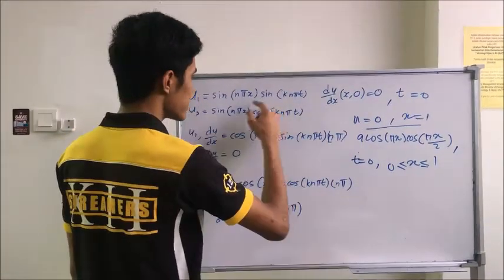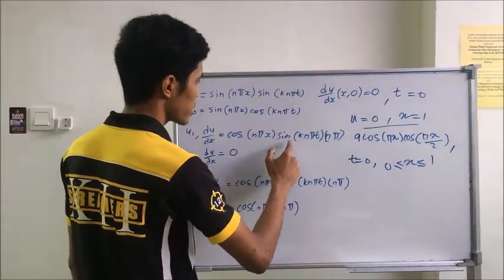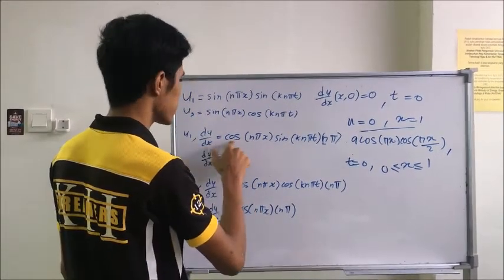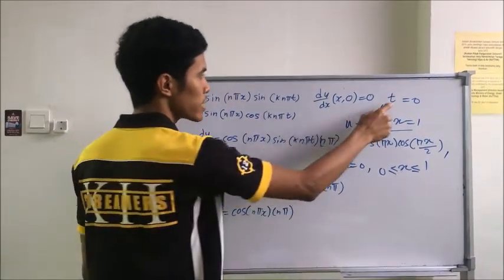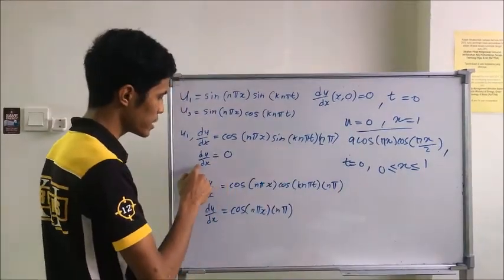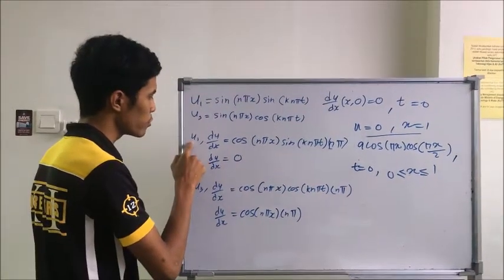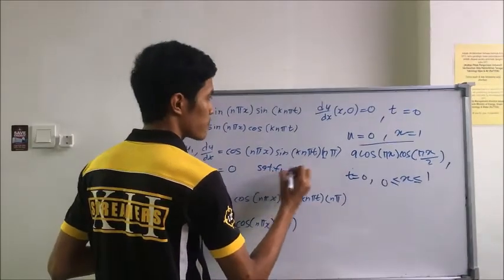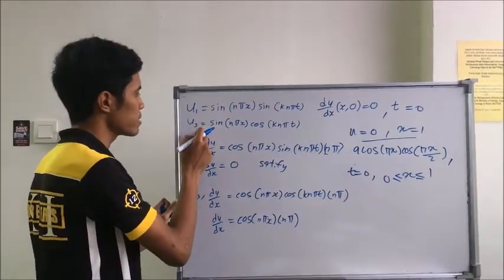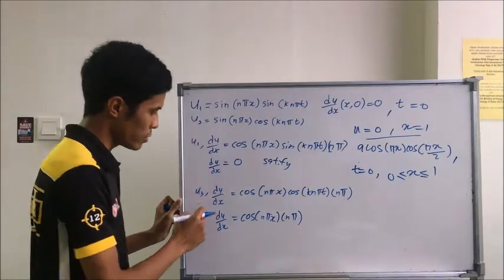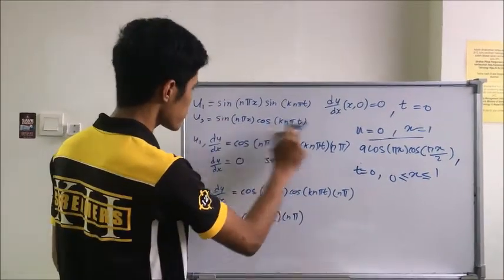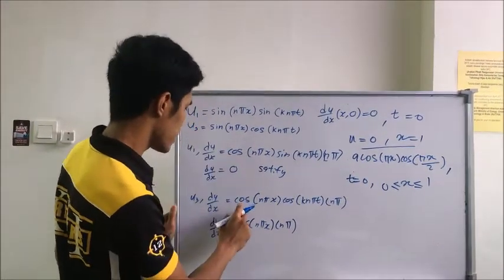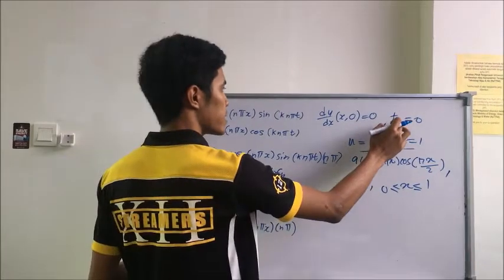So we differentiate this to get the answer. The dux is cosine. Sine changes to cosine, and we substitute when t is equal to zero. And we get the dux for u1 is zero, so it's satisfied for this condition. And next, we check u3. We differentiate the equation.